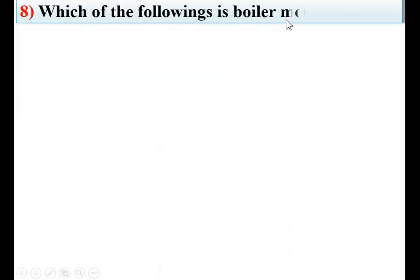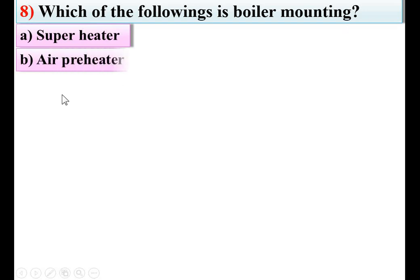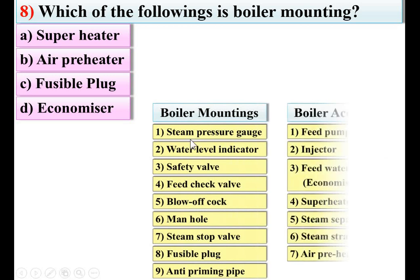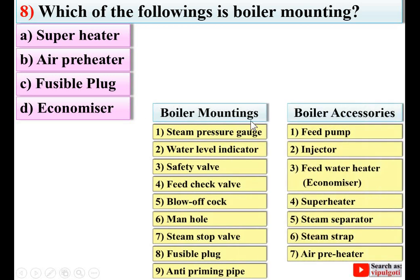Which of the following is a boiler mounting? Options: superheater, air preheater, fusible plug, economizer. Once again considering the list of boiler mountings and boiler accessories — fusible plug is a boiler mounting. So C is the right answer.